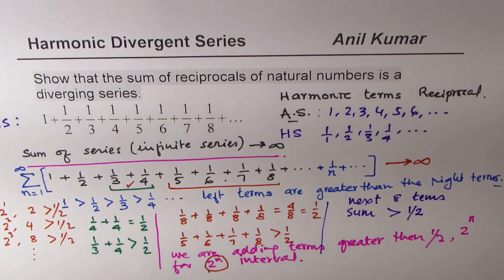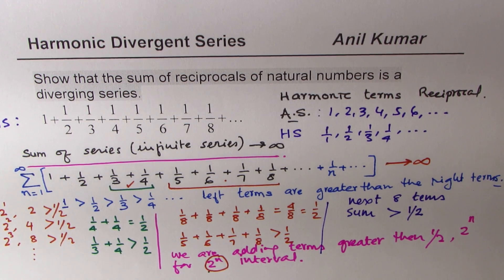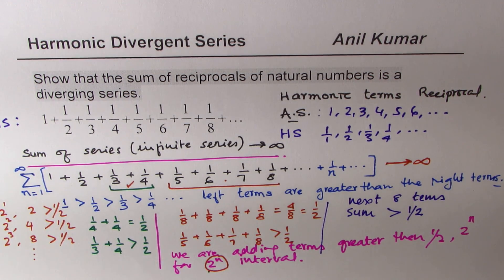That is how we can show that the harmonic series — made up of reciprocals of natural numbers — is a divergent series. We are not giving a precise mathematical value here but a clear reasoning for why it diverges. I hope the explanation helps. Feel free to write your comments and share your views. If you like and subscribe to my videos, that'd be great. Thanks for watching and all the best.